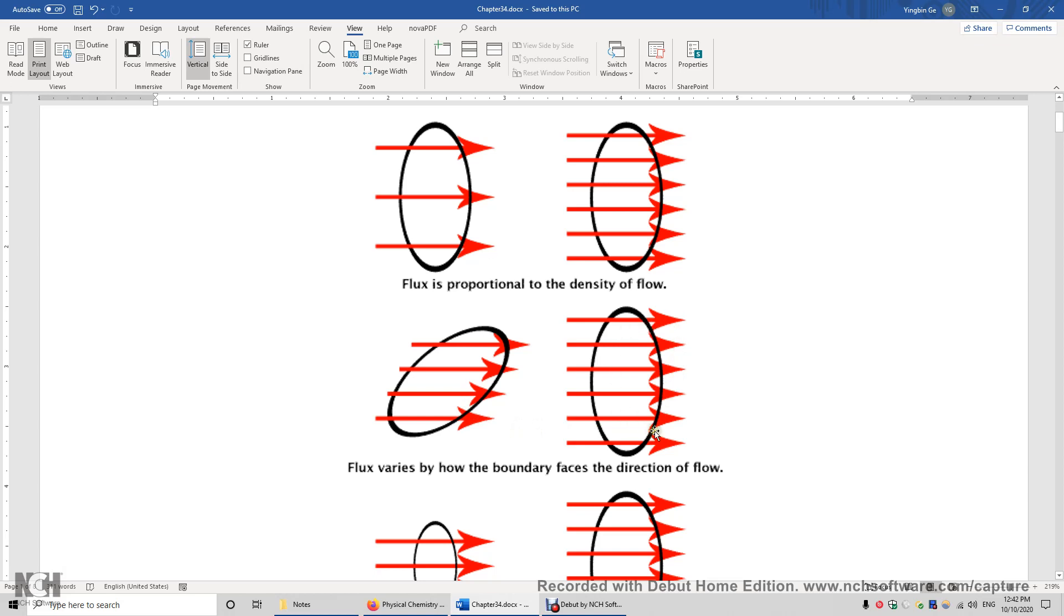When this surface area contains the direction of the flow or is parallel with the direction of the flow, there is no flux. Over here, this surface area is perpendicular to the direction of the flow, and then we have the maximum flux.